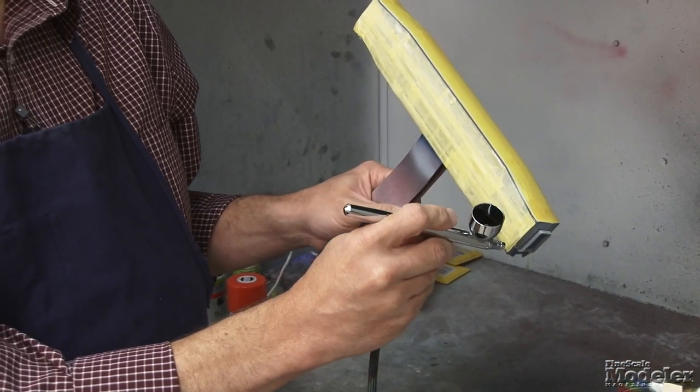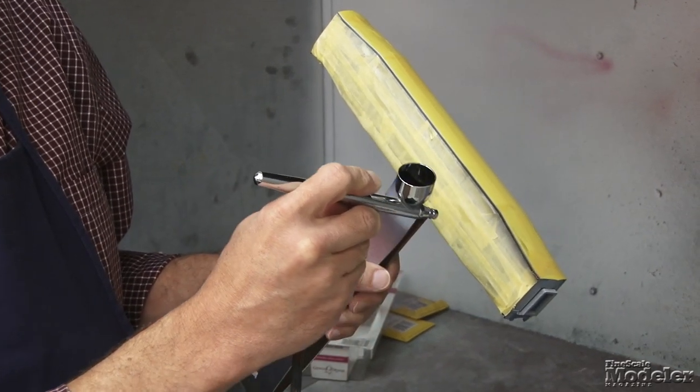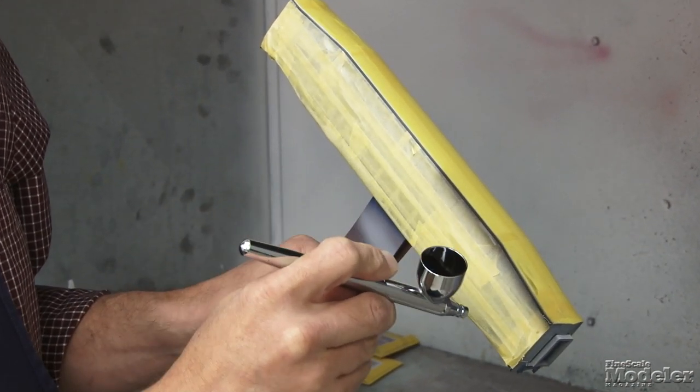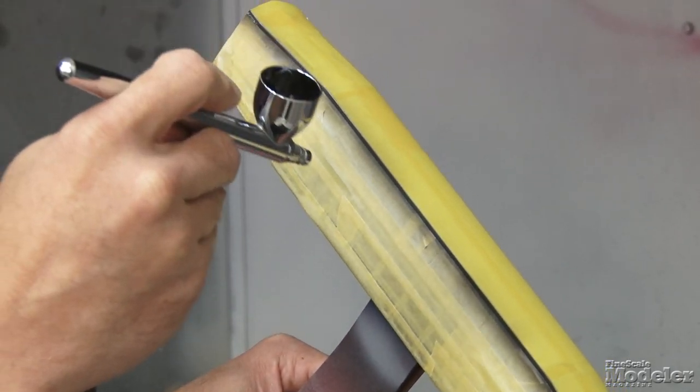All right, so we'll just start by airbrushing black. I'm spraying it about 15 or 18, somewhere between 15 and 18 PSI here. Keep the pressure a little low so that I can minimize bleeding.